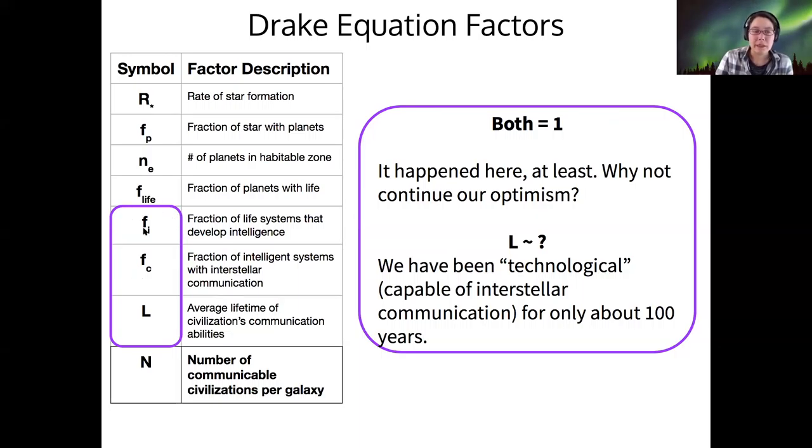We're going to say that both of these fractions, the number that develop intelligence and then go on to develop communication are equal to one because we're just going to continue with our optimism. And as far as the lifetime of civilizations, we really have no idea. At least us, we've only been capable of technological, being a technological society that can do interstellar communication for about 100 years. So at least 100, but I guess we don't know how long we're going to have a run of it here.